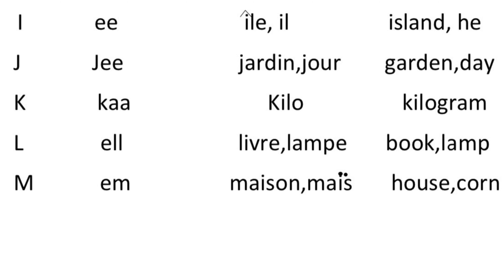In French we put an 'e' at the end of lamp — the rest of the spelling is the same as in English. We pronounce it 'lamp' because the 'e' is silent at the end. When A-M comes together it gives a nasal sound, that's why it's 'lamp'. M — the pronunciation is the same as in English, 'em'. Example: maison (house), maïs (corn).